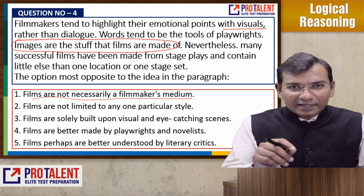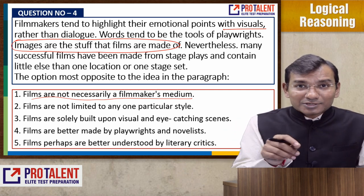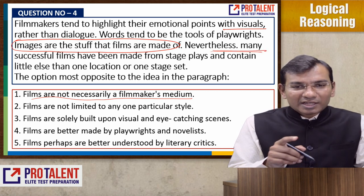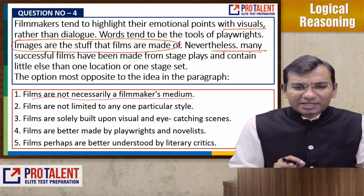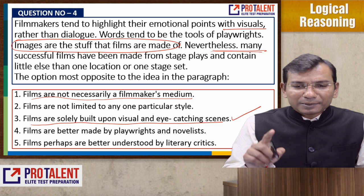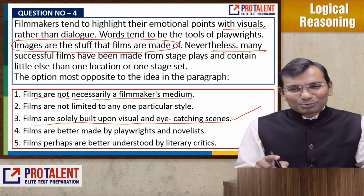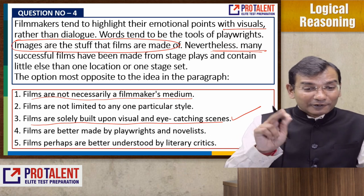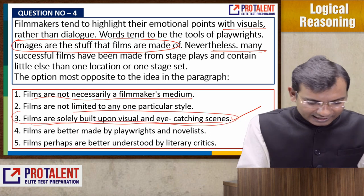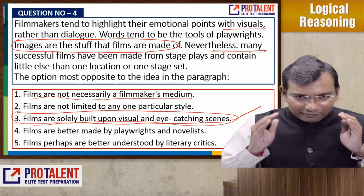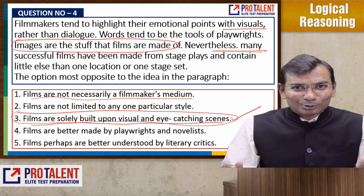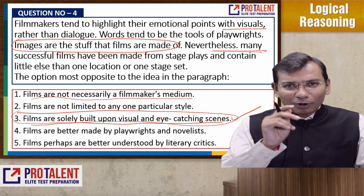Option one: 'Films are not necessarily a filmmaker's medium' — not directly connected to the paragraph's core idea. Option two: 'Films are not limited to any one particular style' — not the opposite; they mention both images and stage plays. Option three: 'Films are solely built upon visual and eye-catching scenes' — this is directly opposite because the paragraph explicitly says successful films have also been made from stage plays with minimal visuals. Option four about playwrights and novelists and option five about literary critics are out of context. The best answer is three.